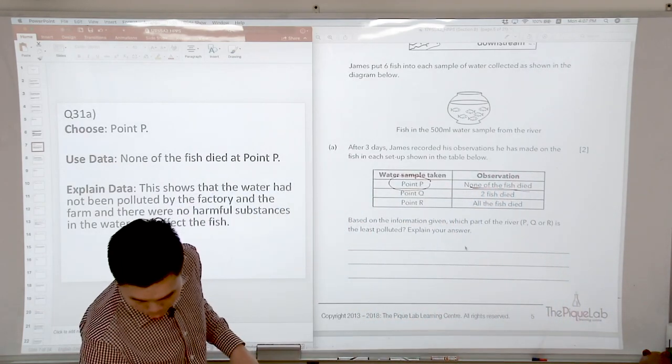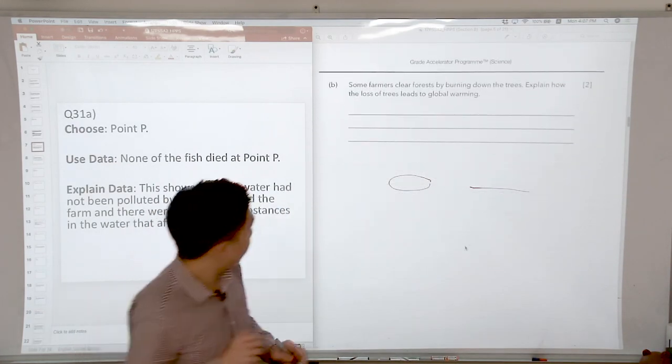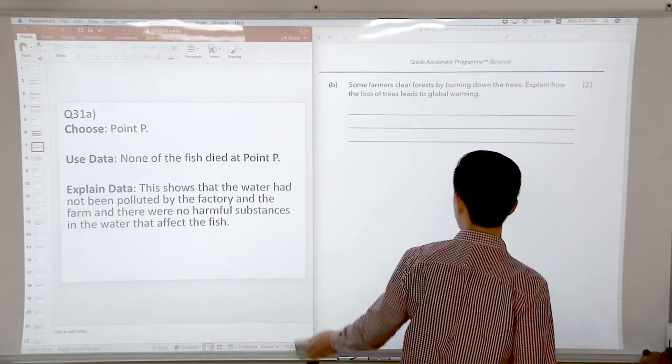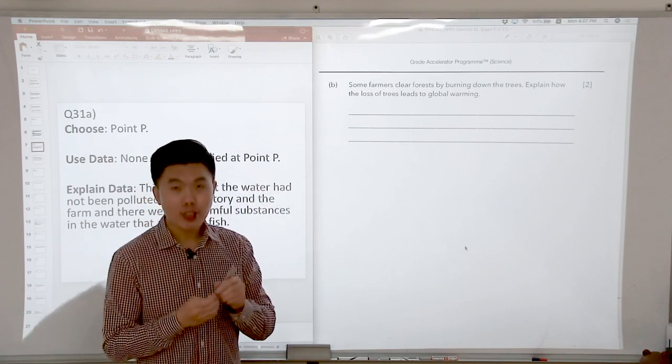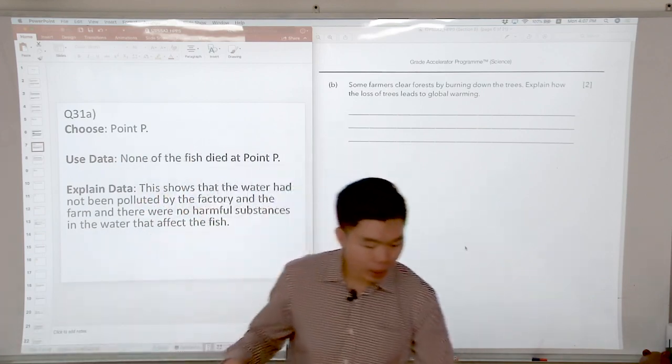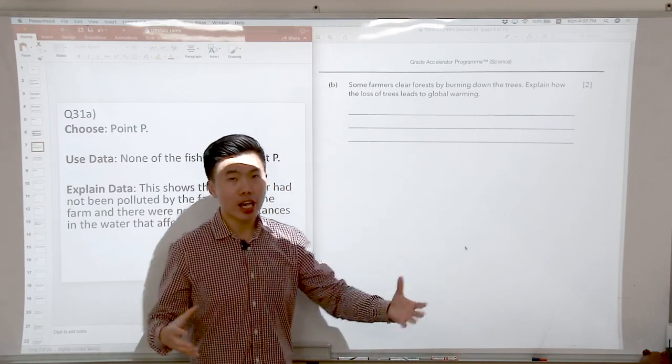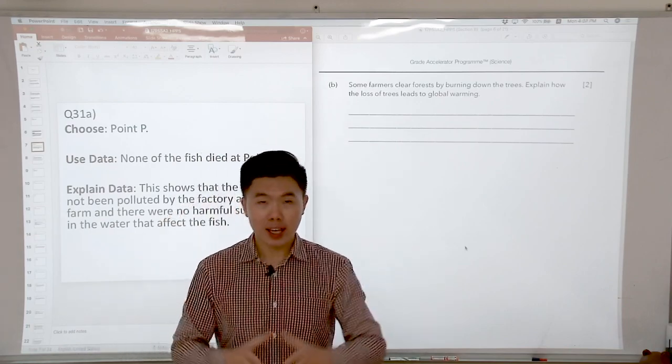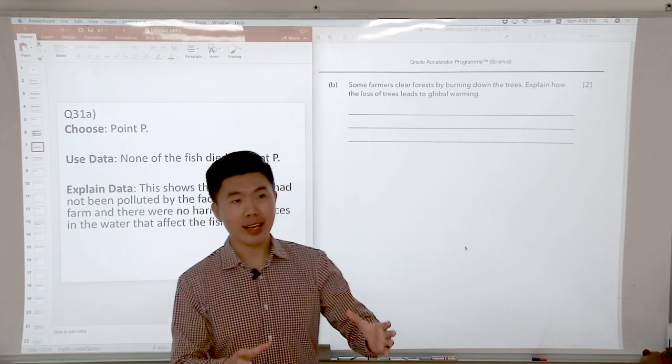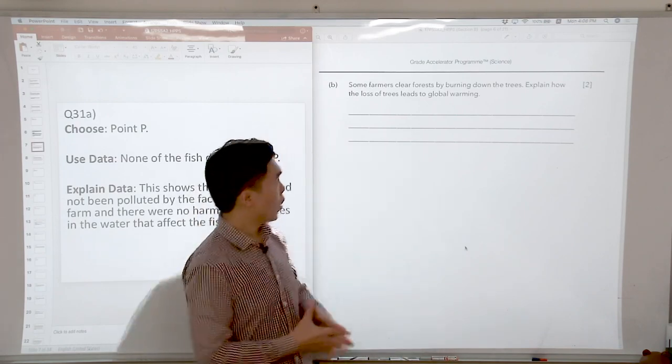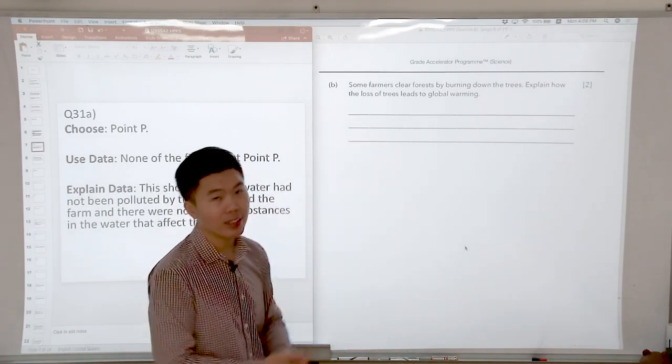Let's look at part B of the question. Some farmers clear forests by burning down trees. Explain how the loss of trees lead to global warming. So in order for us to understand global warming, we must understand what are the causes of global warming. And one of the key causes is actually greenhouse gases. One major greenhouse gas that we always talk about is carbon dioxide. So how is this linked to trees?